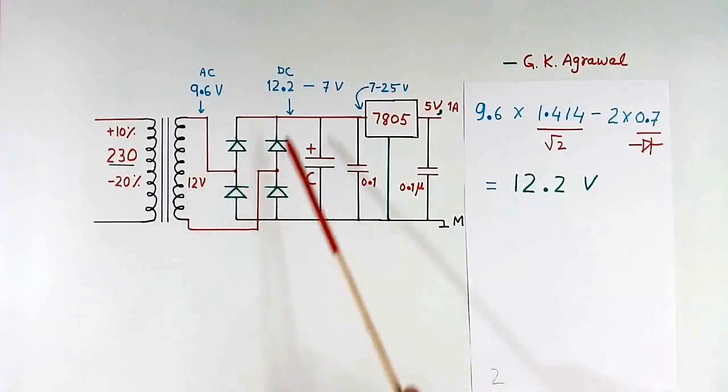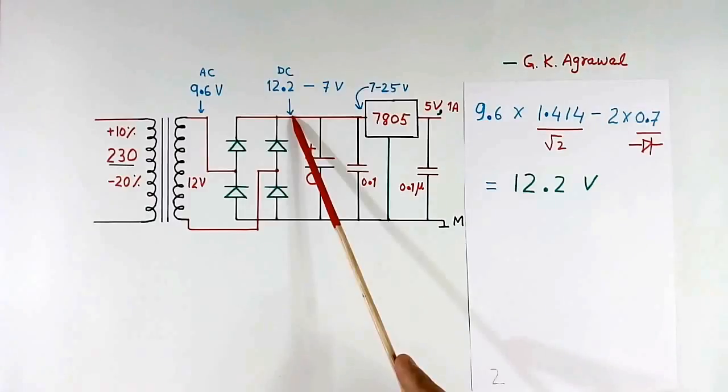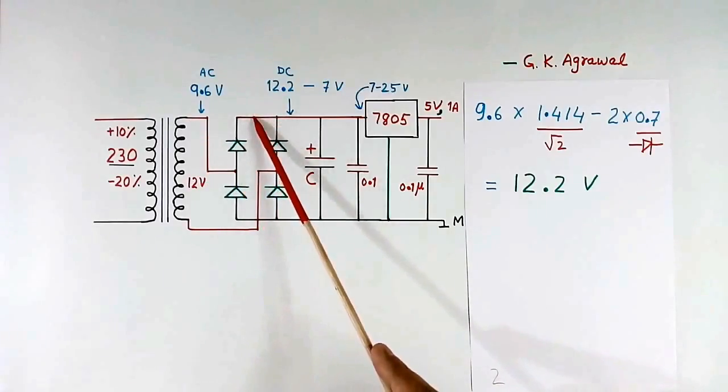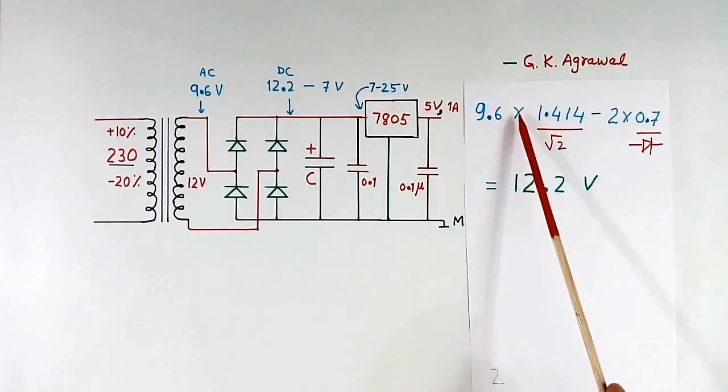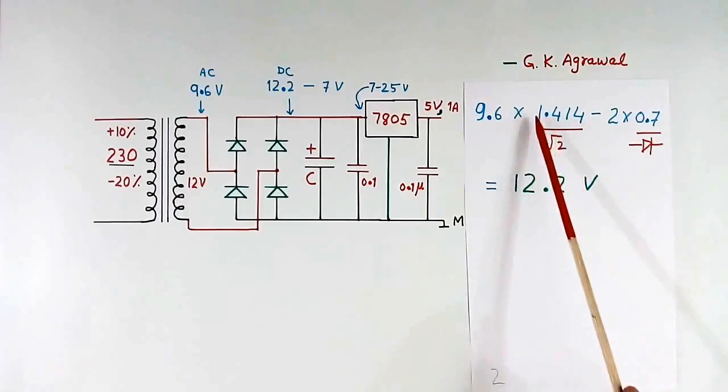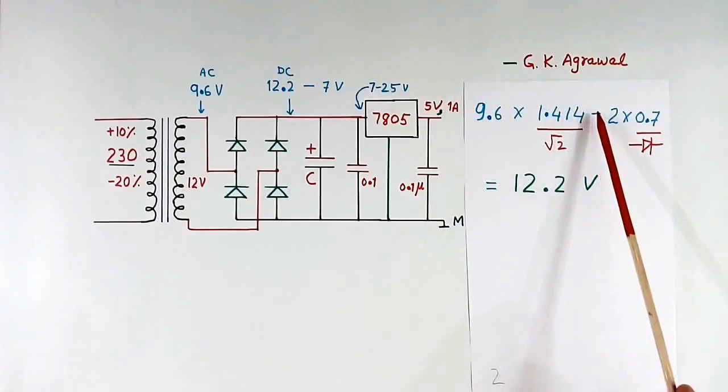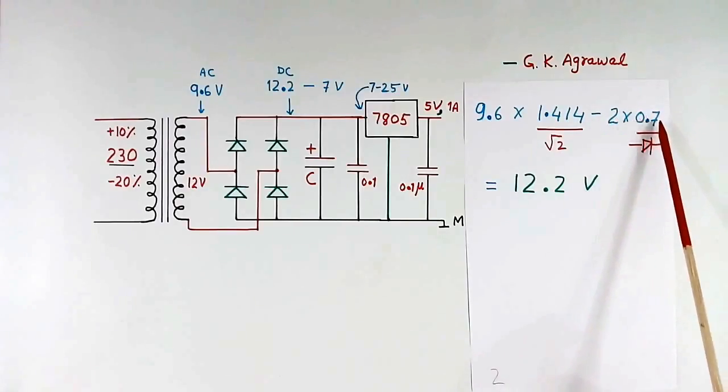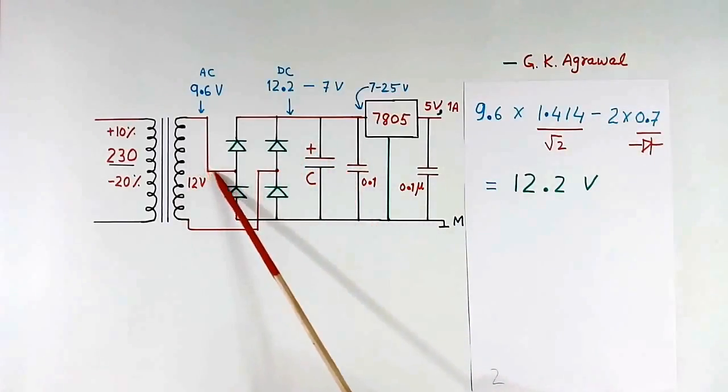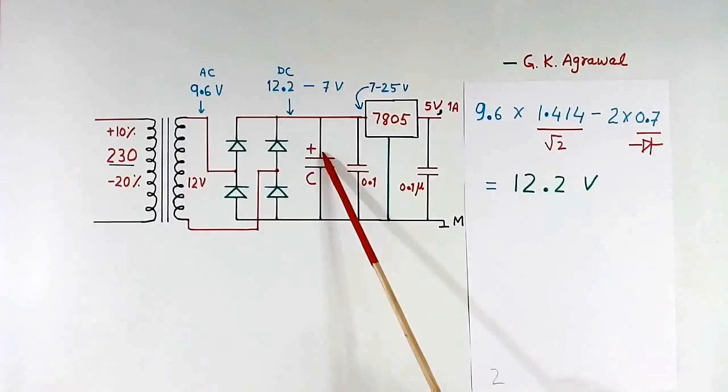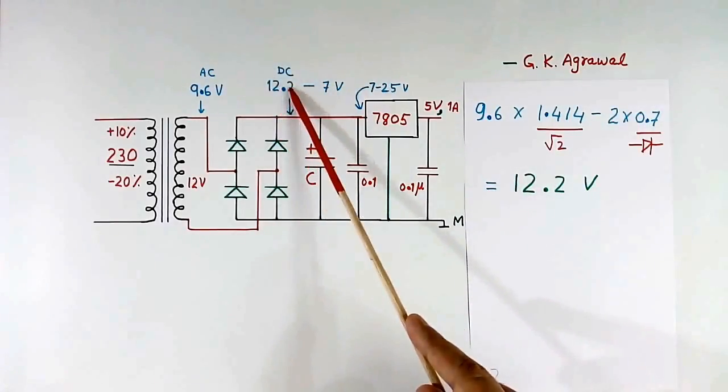Now we will calculate the maximum voltage coming here. Here we were getting 9.6 volt. Then first we calculate the peak here. That will come 9.6 volt multiply by root 2. Root 2 is 1.414 volt. Then from result of this peak voltage, we reduce 2 times of diode drop. This is capacitor. Charging will be like this. So 2 diodes will be coming in series of this capacitor, so double drop. So when we calculate this, we get 12.2 volt. So at this point we will get 12.2 volt DC.